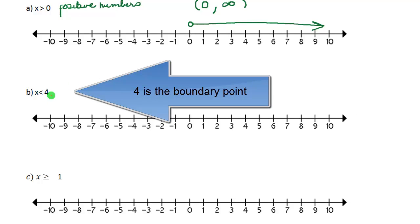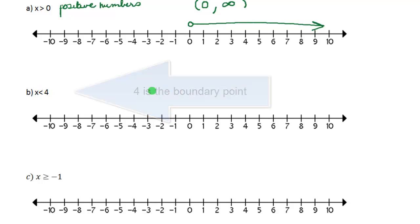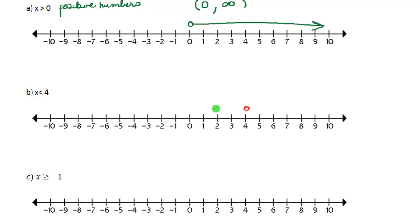The next problem says x is less than four, so our boundary point this time is four. We have an open circle at four because we have a strict inequality — no equal sign. But this time we need all the numbers that are smaller than four, so we're going to go to the left of four and draw our arrow.